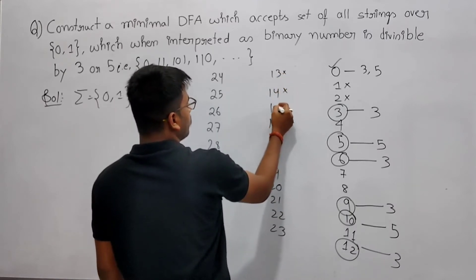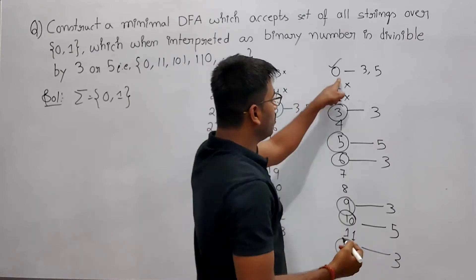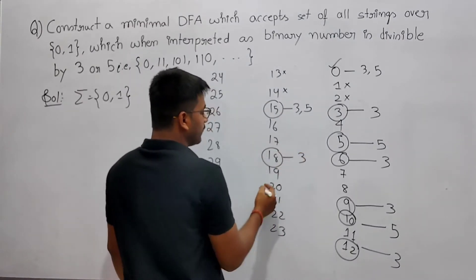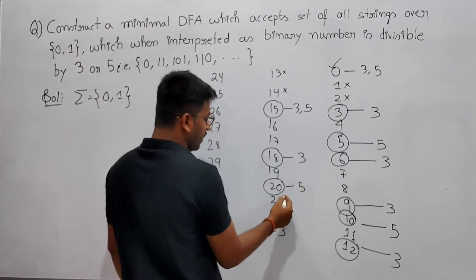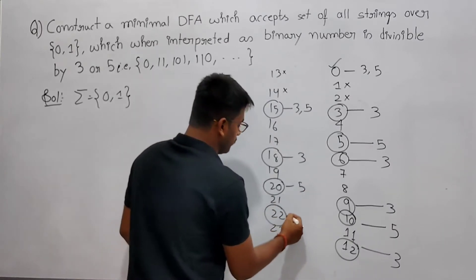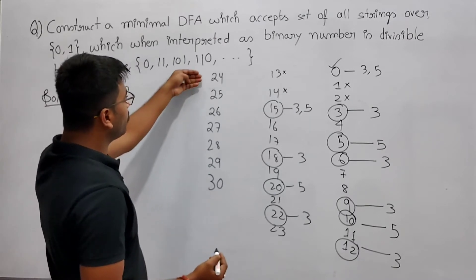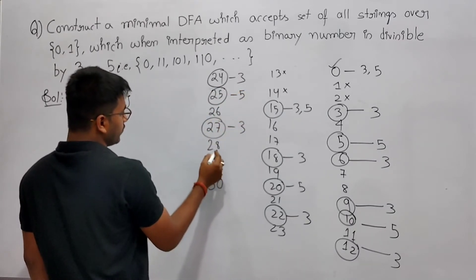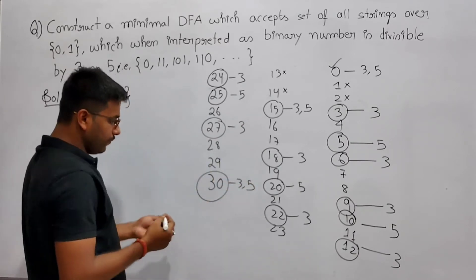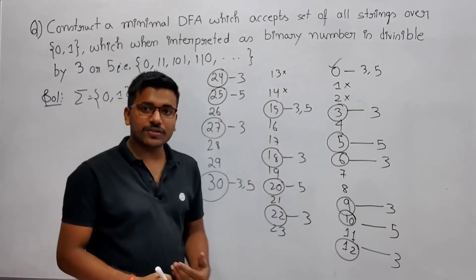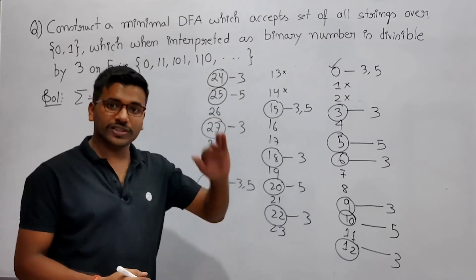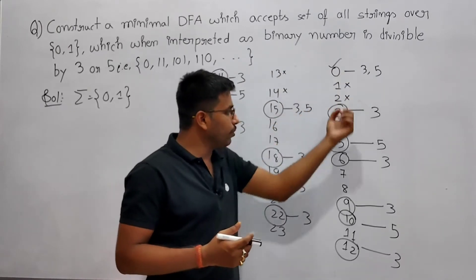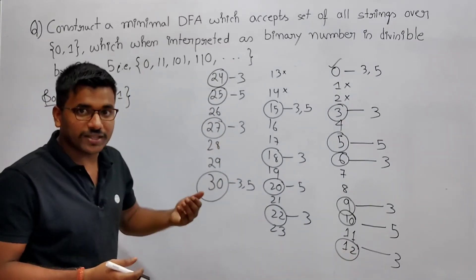15 is divisible by both 3 and 5. Then 16 is not, 17 is not, 18 is divisible by 3, 19 is not, 20 is divisible by 5, 21 is not, 22 is not, 24 is divisible by 3, 25 is divisible by 5, 27 is divisible by 3, and 30 is divisible by both 3 and 5.